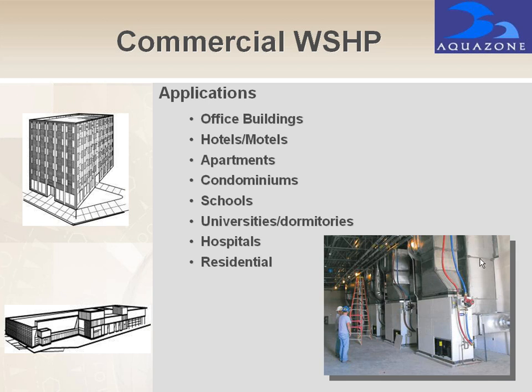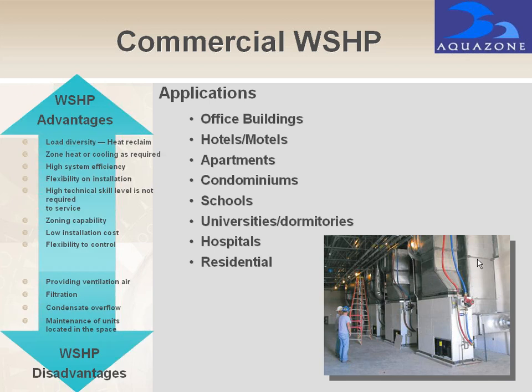Water source heat pumps have different advantages and disadvantages. They can be used for small zones with low diversity, exchanging heat into the water loop system. They're flexible and highly efficient with fantastic zoning capabilities for multiple small zones with high occupancy changes. Installation cost is low because you're just piping water using pumps in any direction. Disadvantages include potentially needing a separate dedicated ventilation system, filtration requirements at each individual unit, condensate management, and access considerations — most of these units are located in ceiling spaces in commercial applications, so maintenance access needs to be planned.